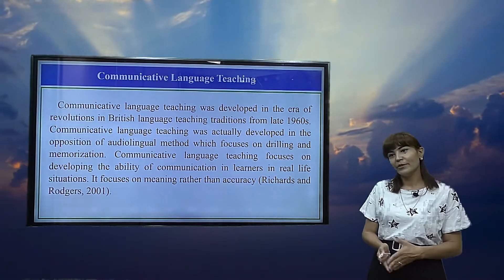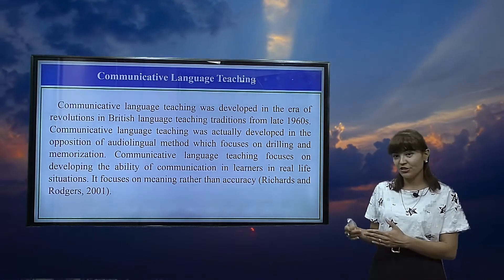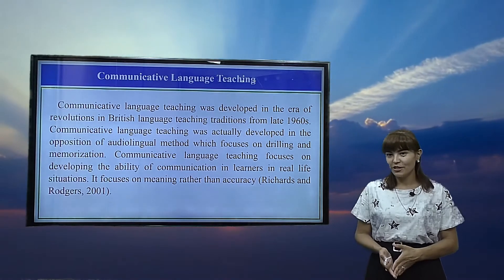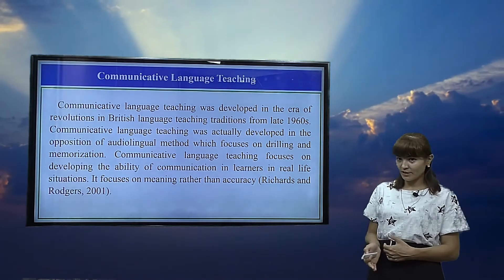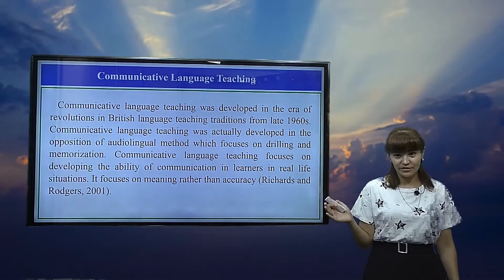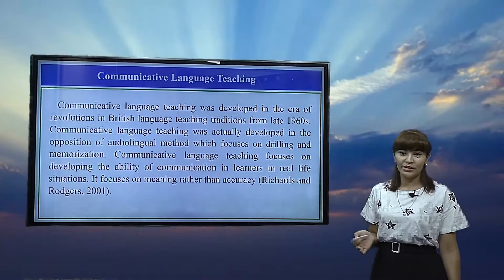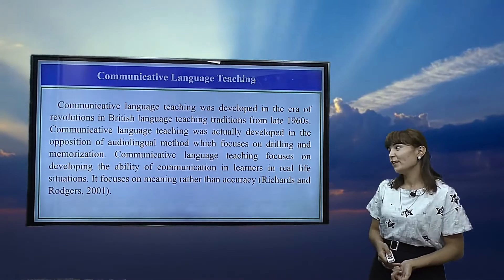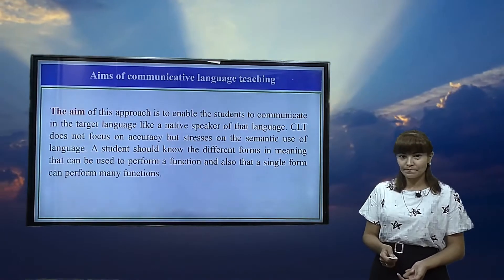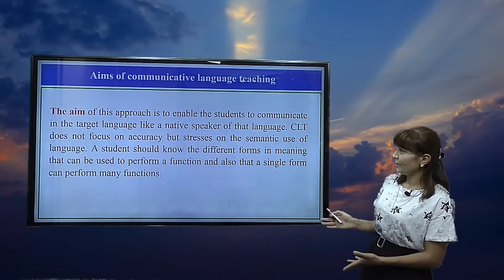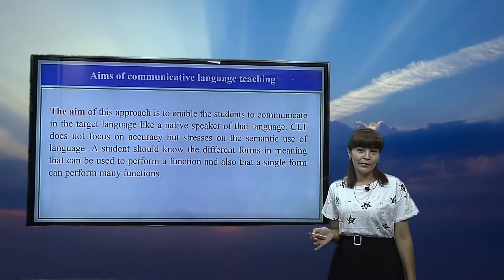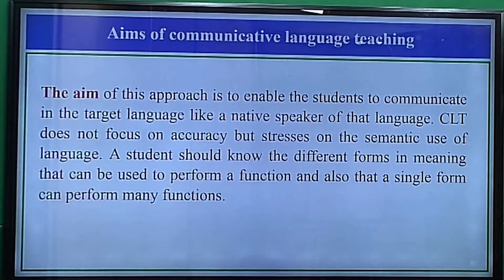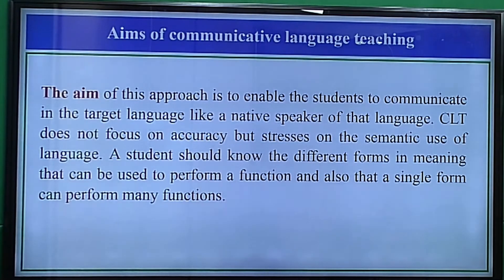Communicative language teaching was developed in the era of revolutions in British language teaching traditions from the late 1960s. It was developed in opposition to the audio-lingual method, which focused on drilling and memorization. Communicative language teaching focuses on developing the ability of communication in learners in real-life situations, and it focuses on meaning rather than accuracy. The aim is to enable students to communicate in the target language like a native speaker. CLT does not focus on accuracy but stresses the functional use of language — a student should know different forms and meanings to perform a function, and that a single form can perform many functions.